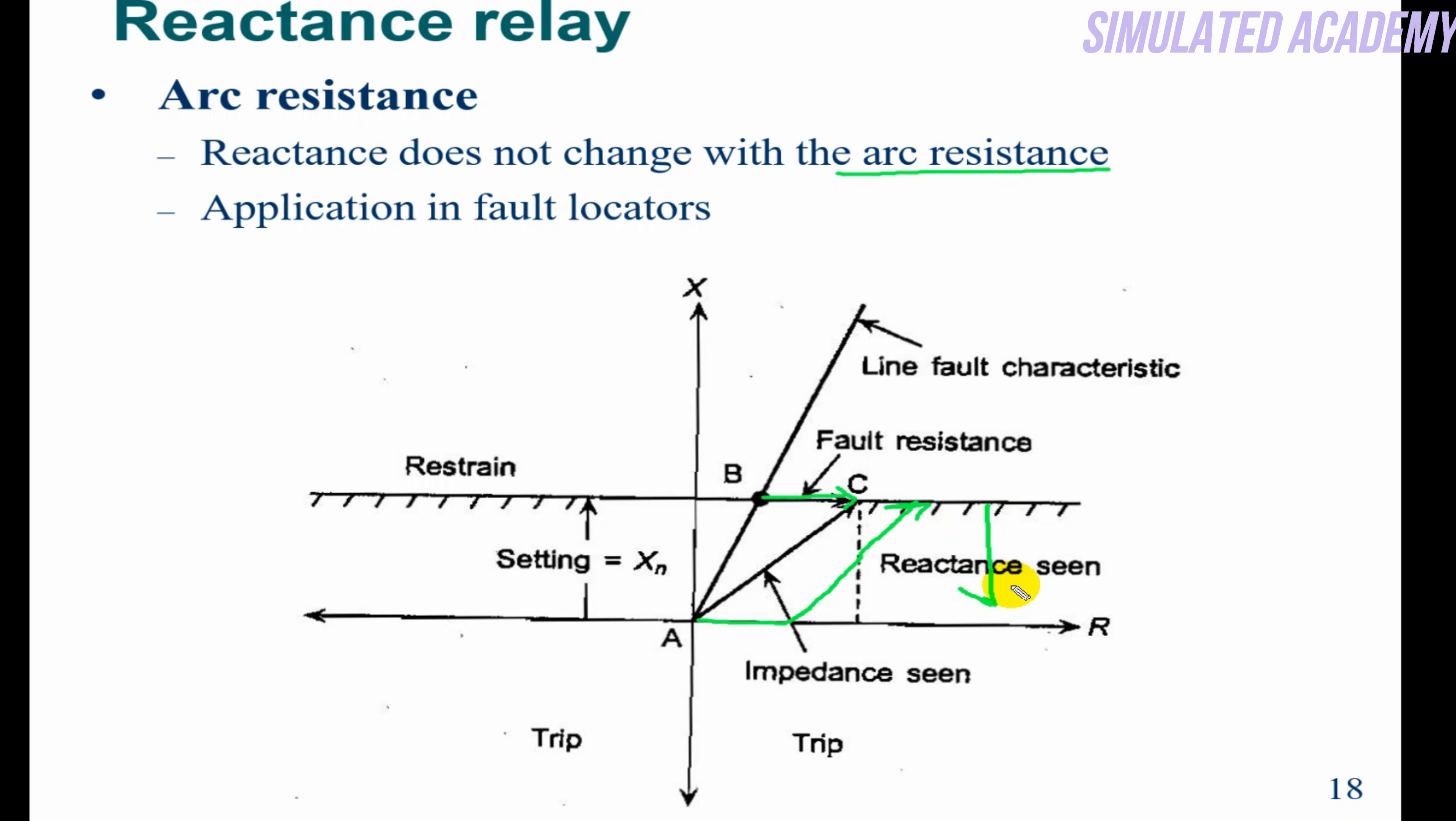If we plot this line, it will still be under this region, so it will operate. This means arc resistance does not change the reactance—reactance doesn't change with arc resistance. So its application is in fault location.